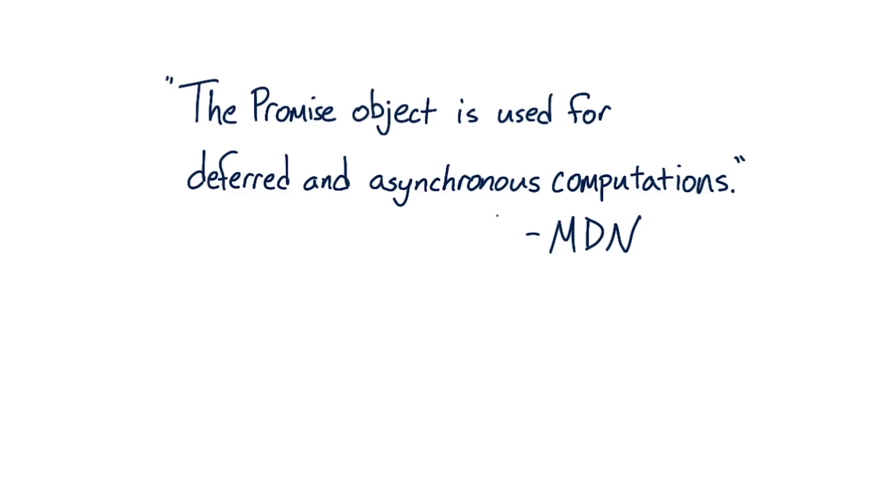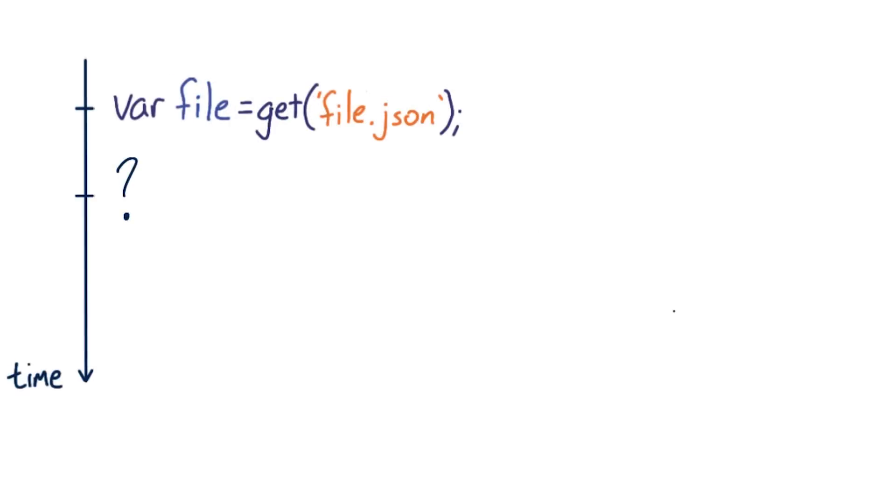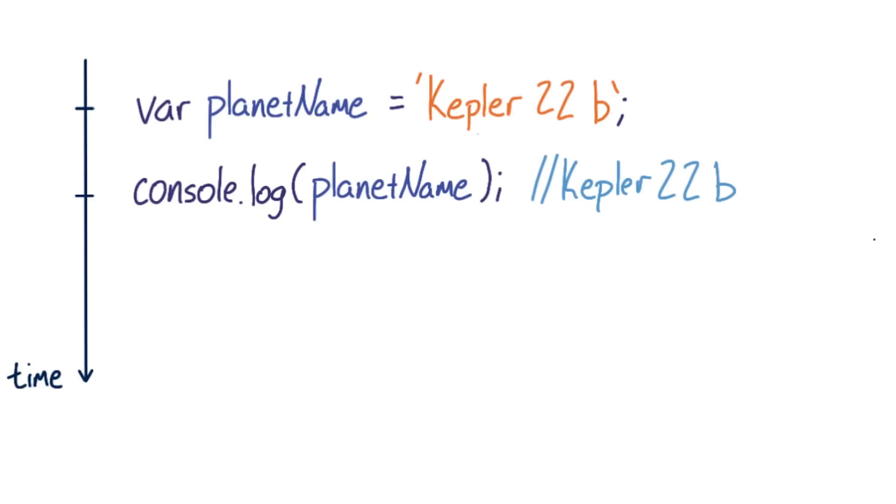So the question is, what is asynchronous work? Asynchronous work happens at an unknown or unpredictable time. Normally, code is synchronous.